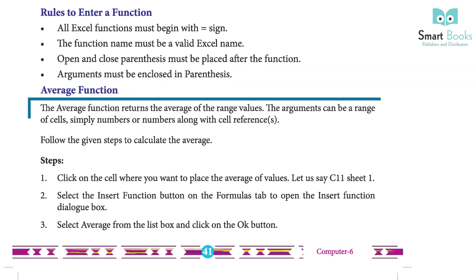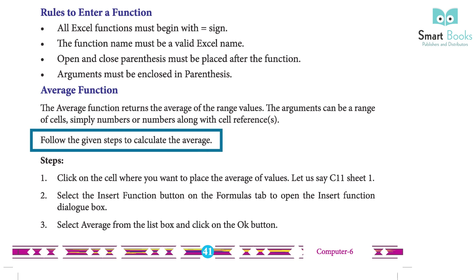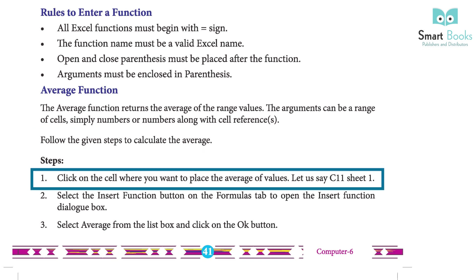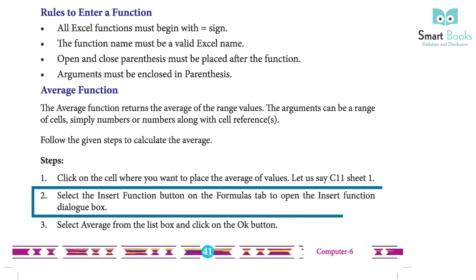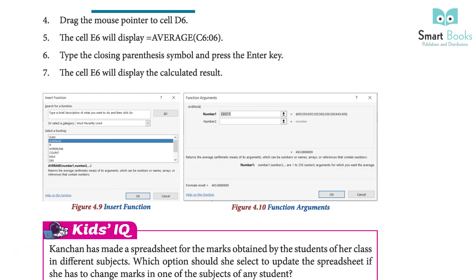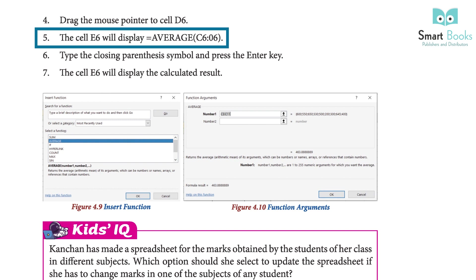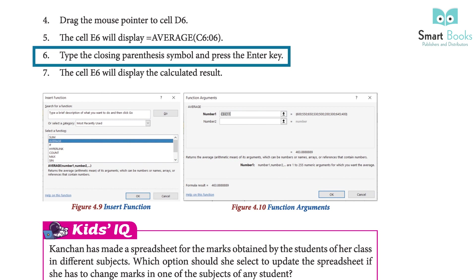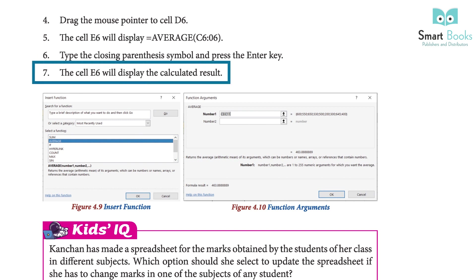Average function: the AVERAGE function returns the average of the range values. Arguments can be a range of cells, simply numbers, or numbers along with cell references. Steps to calculate the average: 1 — click on the cell where you want to place the average, e.g., C11 on Sheet 1. 2 — select the Insert Function button on the Formulas tab to open the Insert Function dialog box. 3 — select AVERAGE from the list and click OK. 4 — drag the mouse pointer to cell E6. 5 — the cell E6 will display =AVERAGE(C6:C6). 6 — type the closing parenthesis and press Enter. 7 — the cell E6 will display the calculated result.